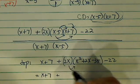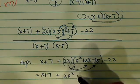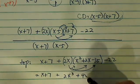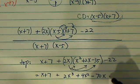x plus 7 plus. Now, this time, 2x has to go into each one of them. So I have 2x cubed plus 4x squared minus 70x, minus 22.